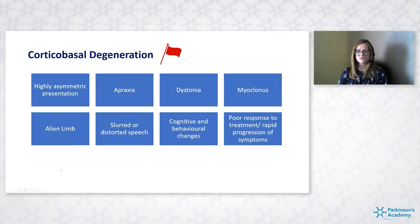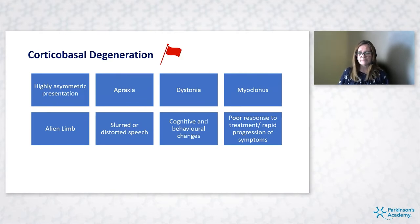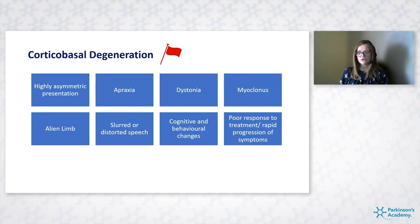Corticobasal degeneration presents with a highly asymmetric presentation. You may see apraxia — clumsiness or awkwardness in the hands — along with dystonia in both upper and lower body. People can present with myoclonic jerks. There's also the alien limb syndrome where one arm reaches or grasps automatically without voluntary control. We can also see alert or distorted speech, and cognitive and behavioural changes including anxiety, depression, and apathy. As with the others, there is typically poor response to treatment and rapid progression.